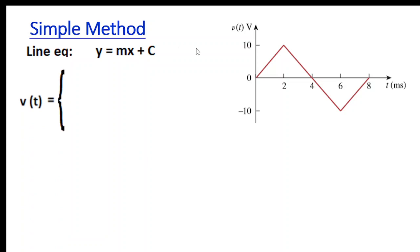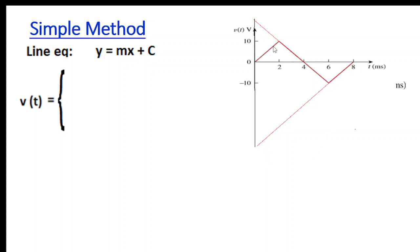In the simple method, we write the voltage equation directly from the graph using the line equation. We extend all the lines to see where they intercept the Y-axis. For the first part, the slope is 10/2ms = 5 kilo, and the C is 0 because the line touches the Y-axis at 0. So we write V(t) = 5×10³·t directly.